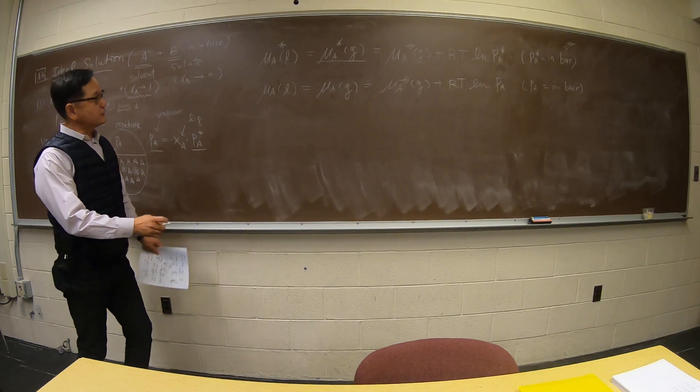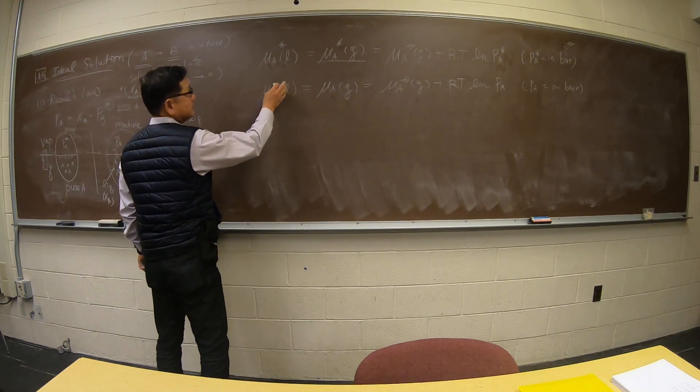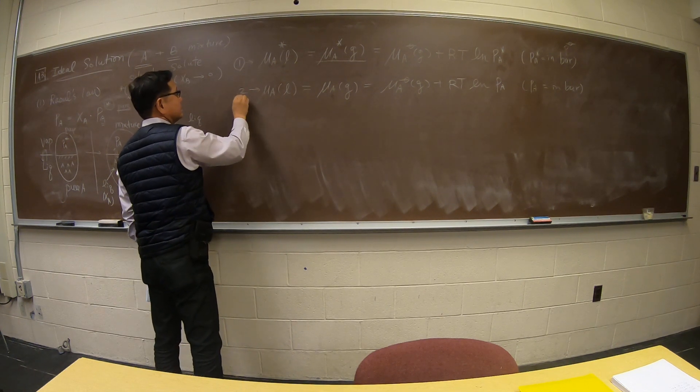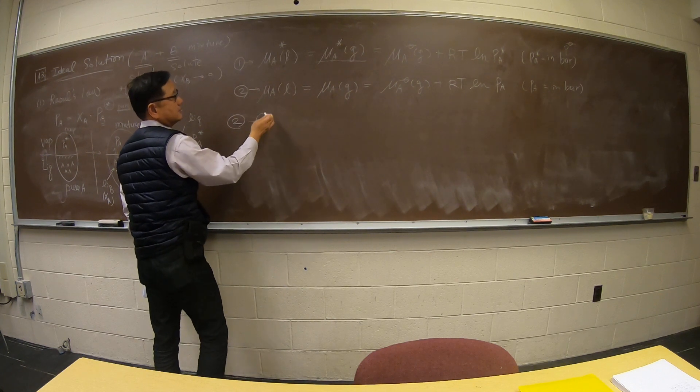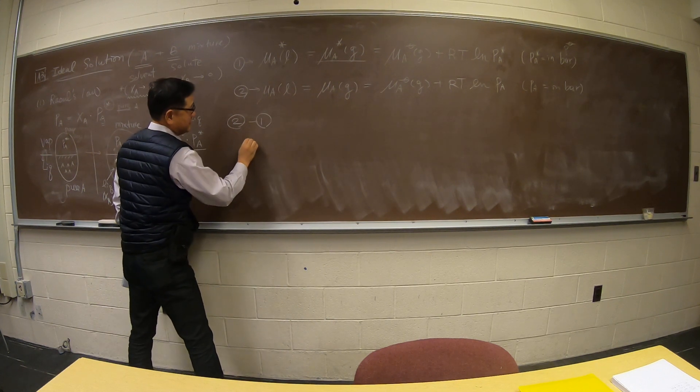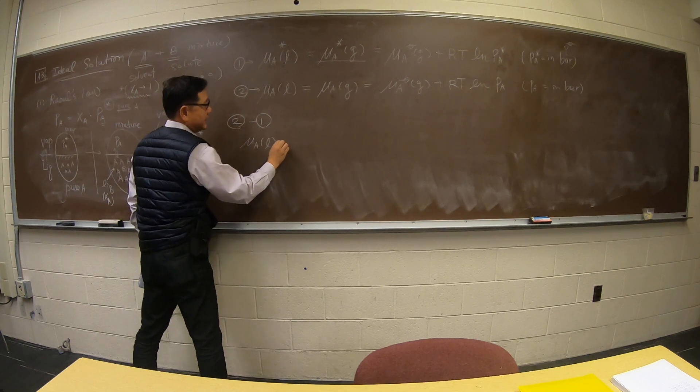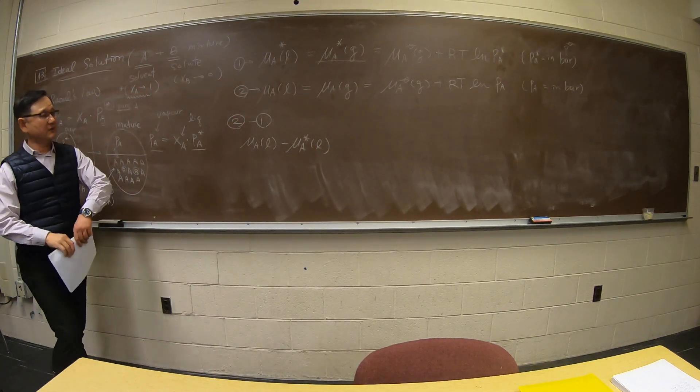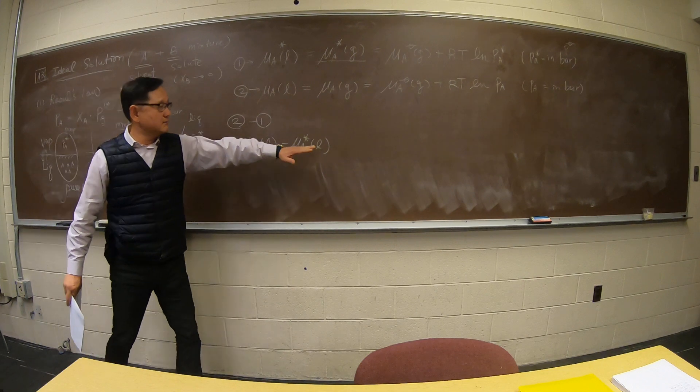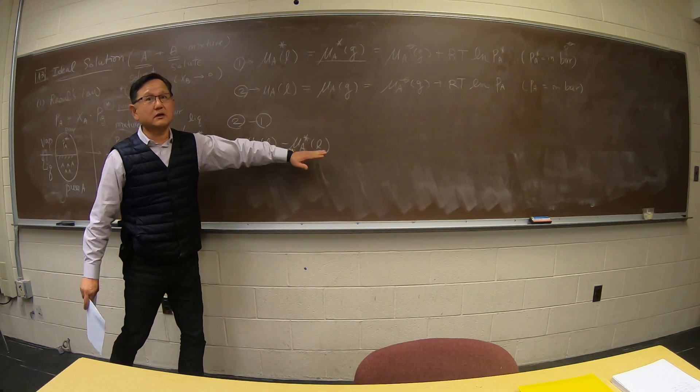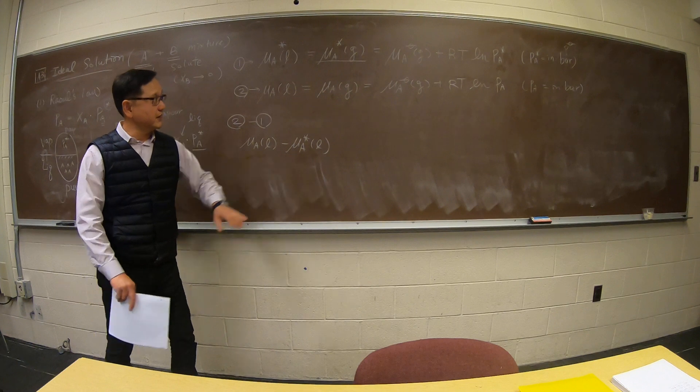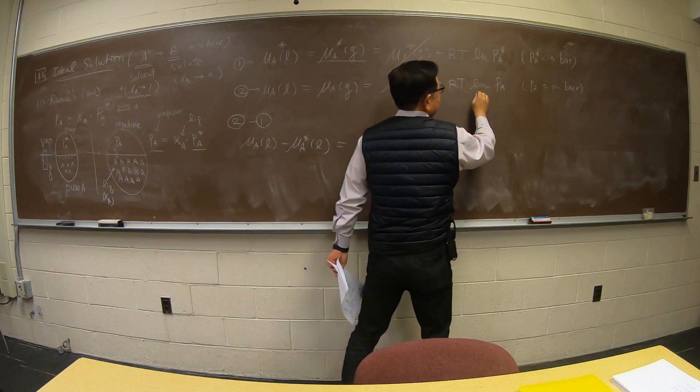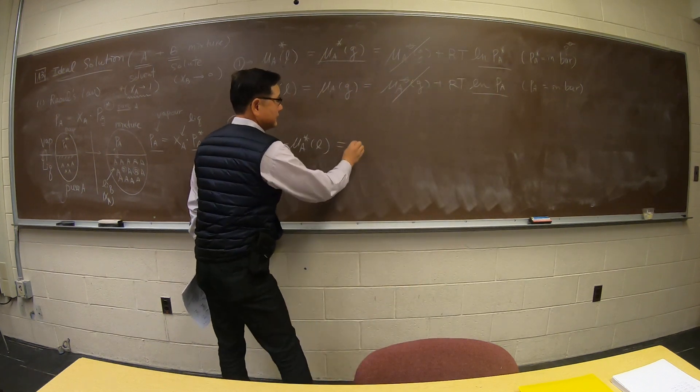So I'll do it one more time, writing it this way. And then what I'm going to do is I'm going to subtract these two. This is equation one. This is equation two. If I do two minus one, this makes me mu A liquid minus mu A star liquid, the difference in chemical potential in the solution state minus pure liquid chemical potential for component A. And then this is all going away. And you only left with the ratio of these two. So it is RT ln.